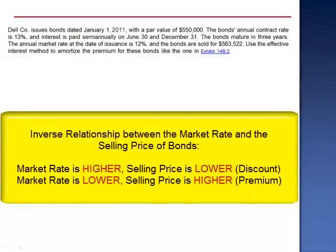Remember the inverse relationship between the market rate and the selling price. As the market rate goes lower, the selling price is higher. When the market rate is less than the contract rate, bonds sell at a premium.